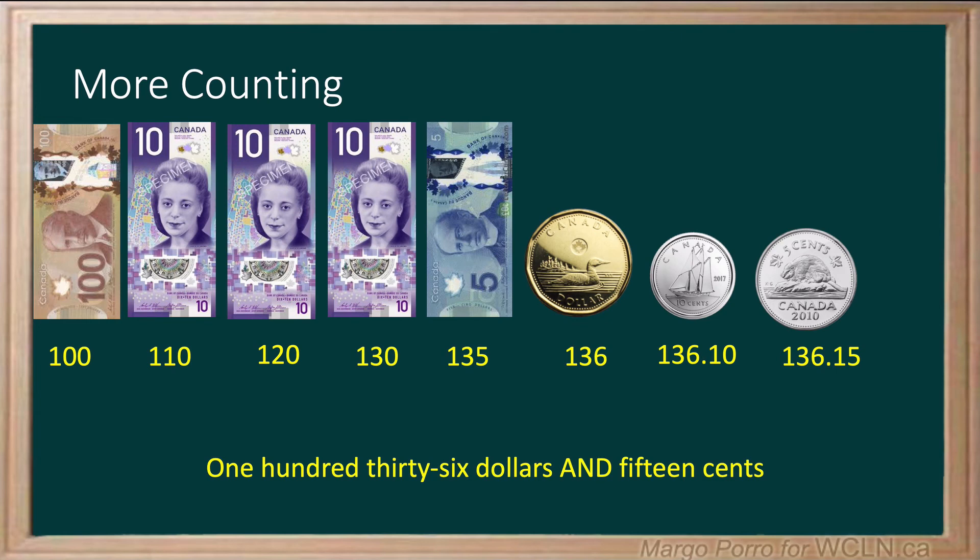136 dollars and 15 cents. Notice, just like with any numbers, the word 'and' is used only to show the decimal. It is written with the dollar sign to the left of the numbers and the decimal between the dollars and the cents.